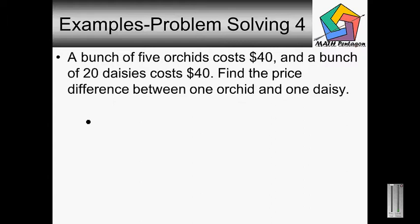So we write it out like this. Five goes into forty eight times, put a decimal point here. Five goes into zero, zero times. So the price of one orchid would cost eight dollars. One orchid equals eight dollars.